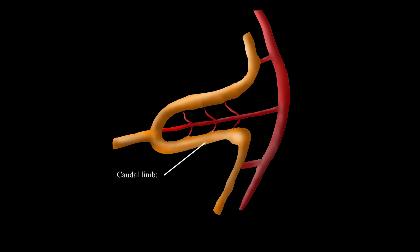The caudal limb of this mid-gut extension will ultimately form the distal ileum, cecum, appendix, ascending colon, and two-thirds of the transverse colon.